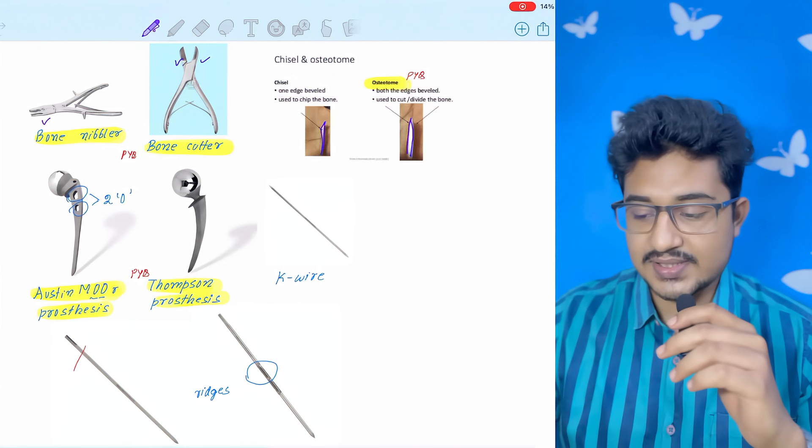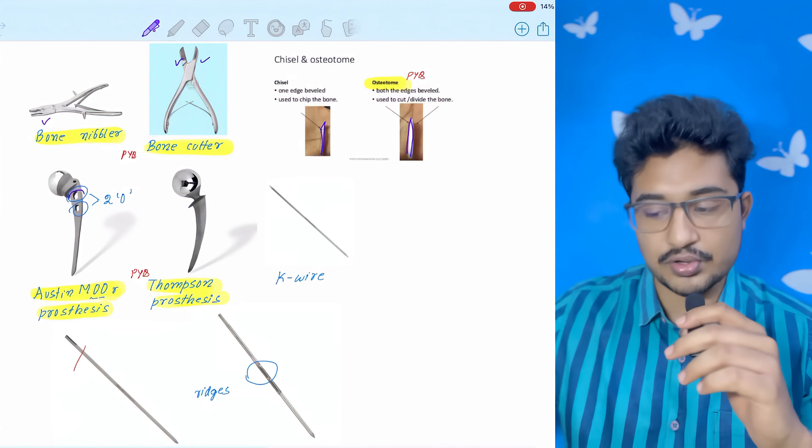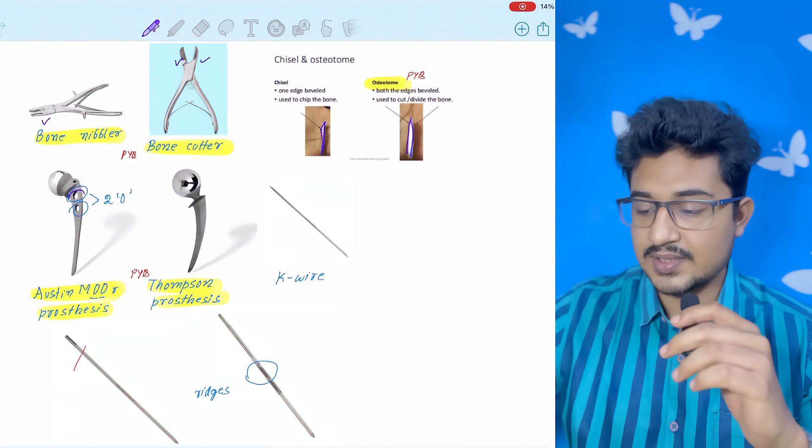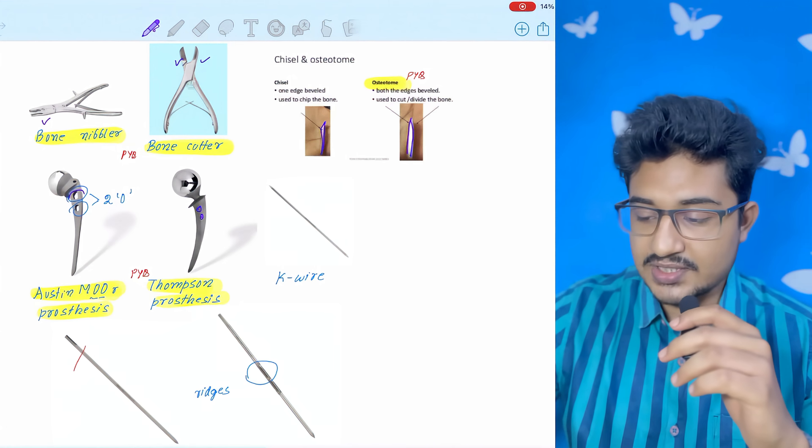Austin Moore prosthesis: there are two Os in the prosthesis. You can remember Austin Moore also has two Os. Thompson prosthesis: there is no empty space in between.